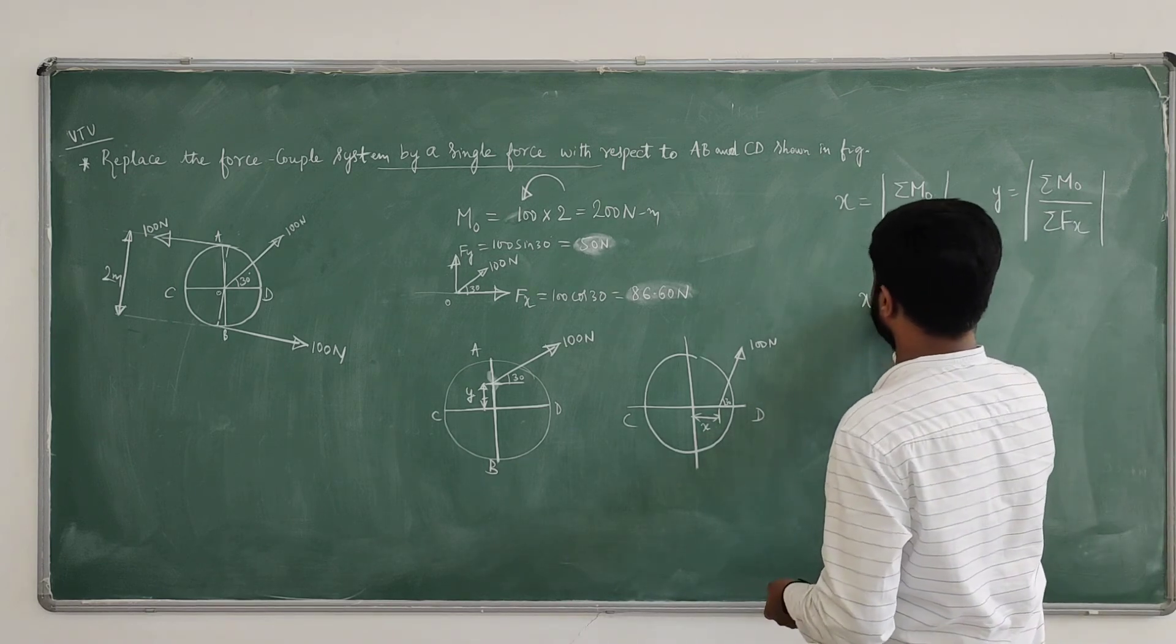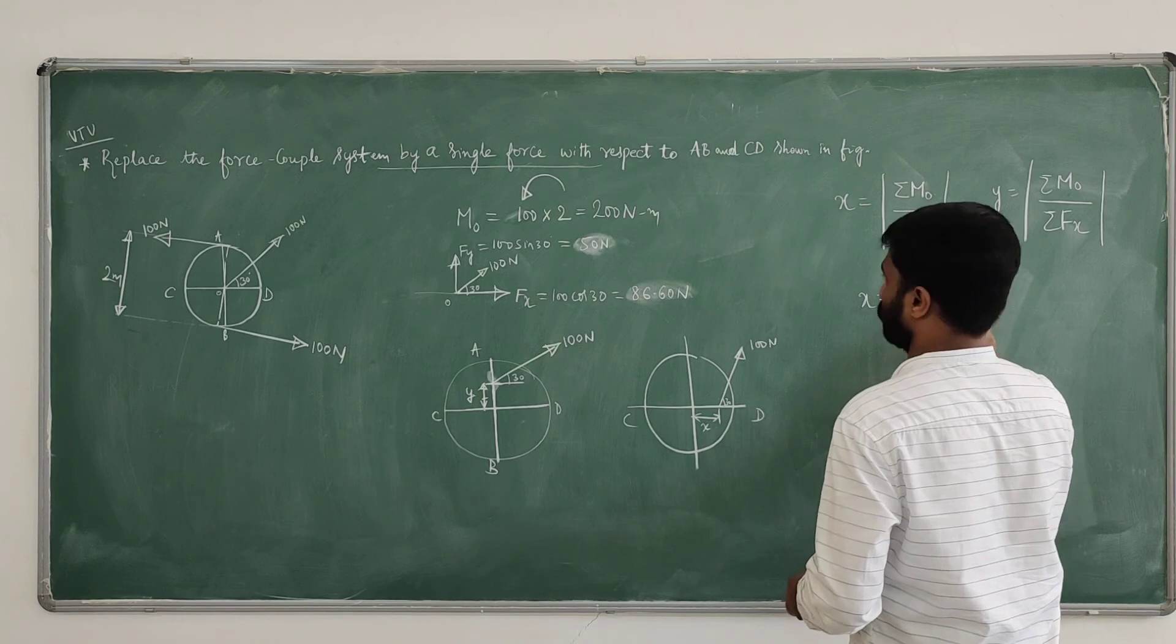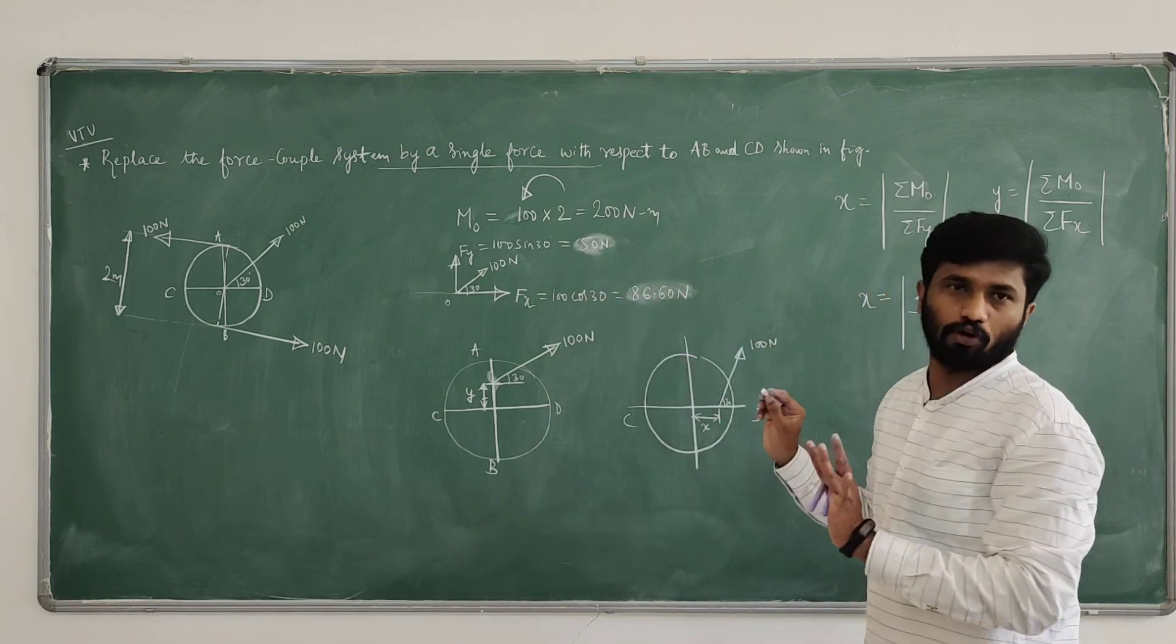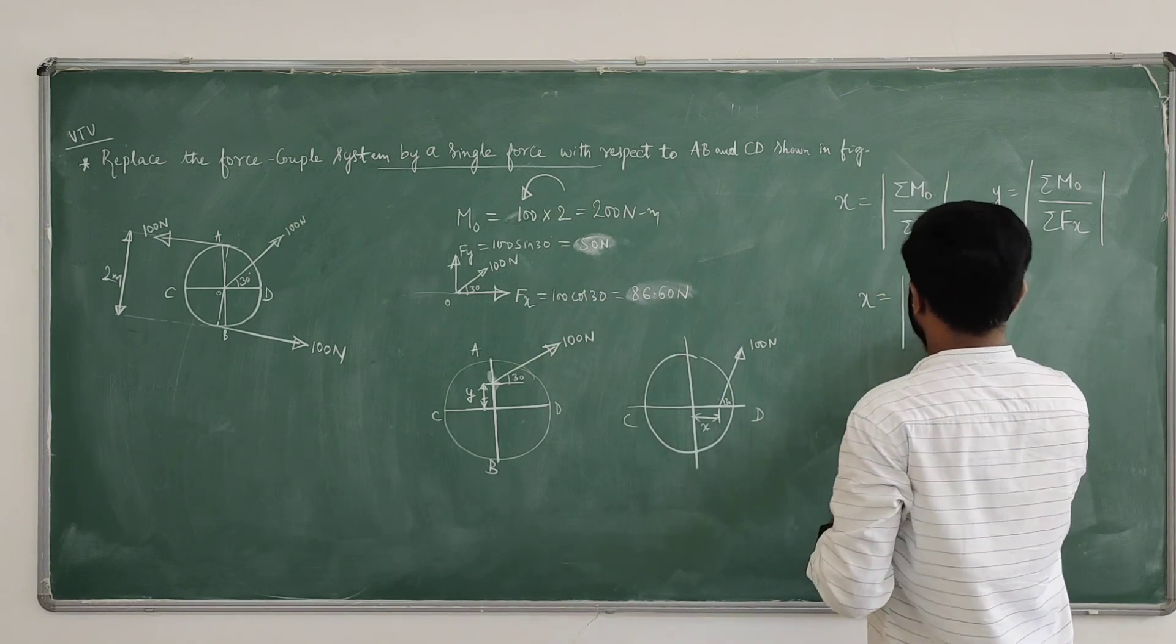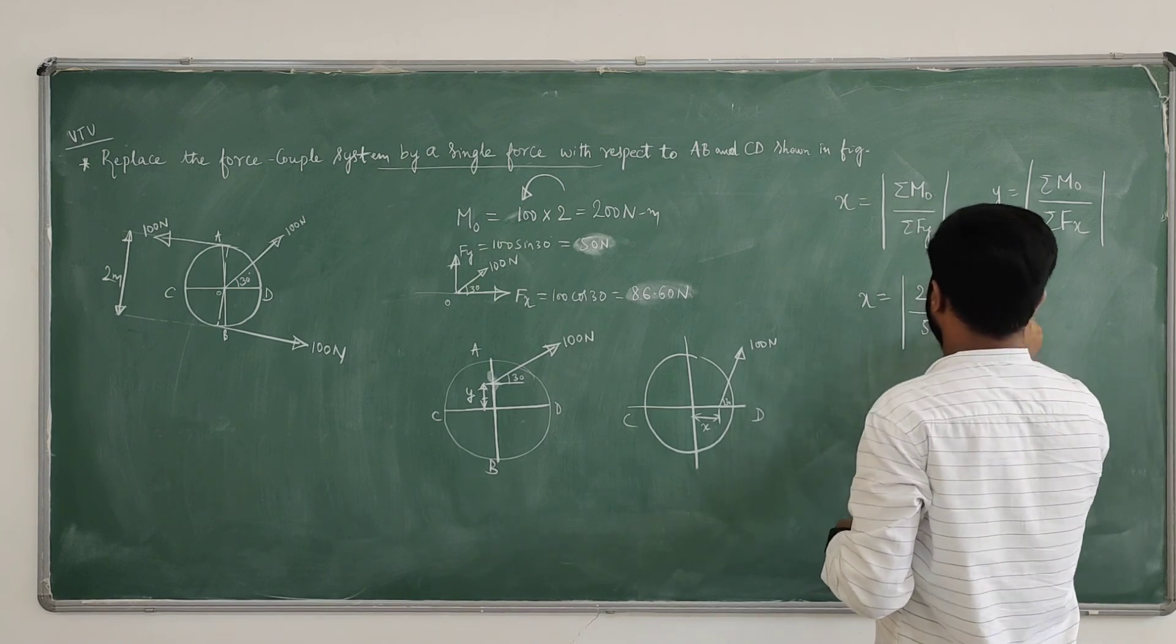Now what is X intercept? X intercept is sigma M naught is 200 divided by sigma Fy. What is resultant force? Fy value is 50. You are getting 200 by 50, 4 meters.